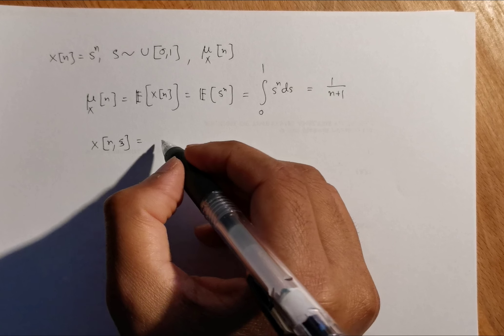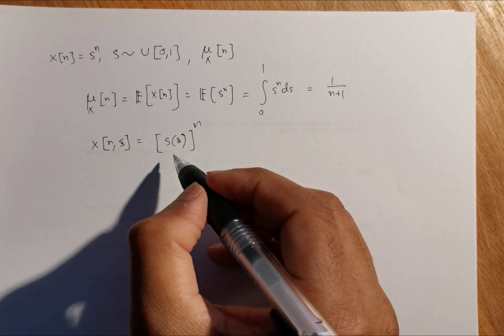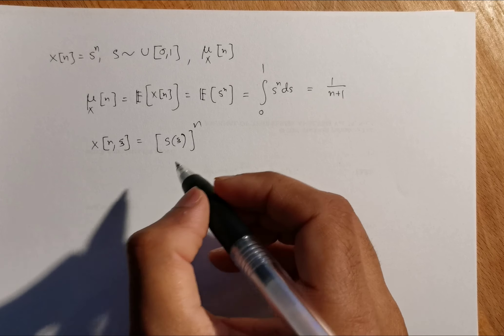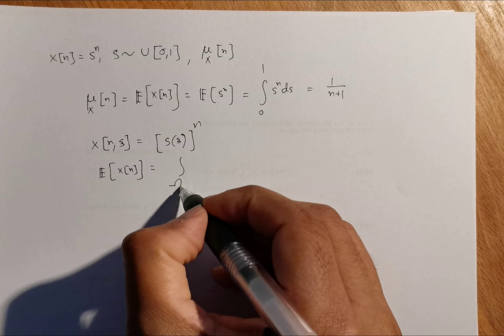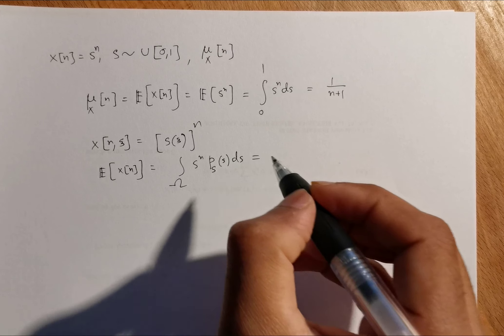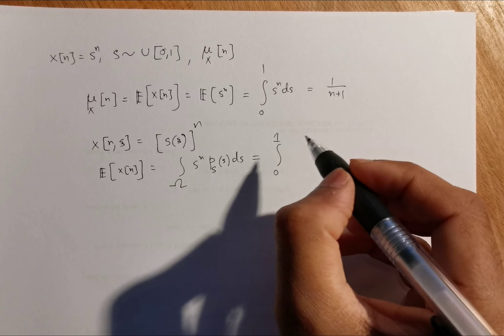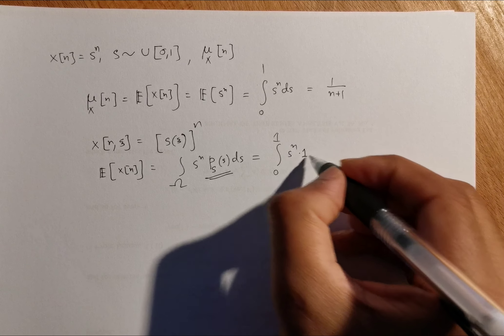The expectation E[x(n)] is equal to the integral over Ω of s^n times p_S(s) ds. Now Ω is [0,1] in this case, and since this is a uniform probability density, it should be 1.